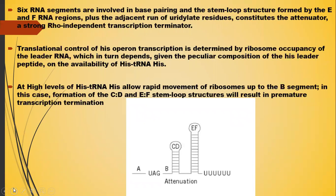There are six RNA segments involved in base pairing. The stem-loop structure formed by the E and F RNA regions plus the adjacent run of uridylate residues constitutes the attenuator and a strong Rho-independent transcription terminator. The translational control of histidine operon transcription is determined by ribosome occupancy of the leader RNA, which in turn depends — given the peculiar composition of the histidine leader peptide — on the availability of histidyl-tRNA.